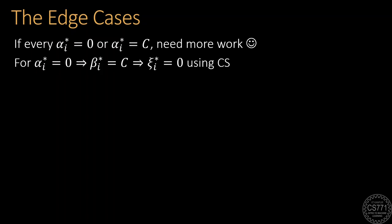Let us now handle the edge cases that we had identified earlier. If we find that every alpha*_i value is either 0 or C, we need to do a bit more work.